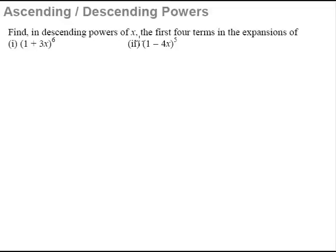Find in descending powers of x, the first four terms in the expansion of (1 + 3x)^6 and (1 - 4x)^5. Now this is exactly the same question that we saw in example 1. The only difference is that now it's in descending order. What you want us to do is to expand this in descending powers of x.